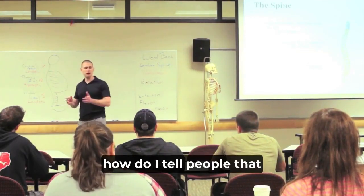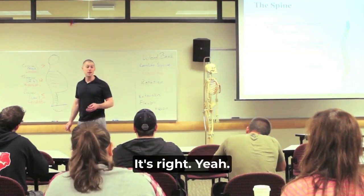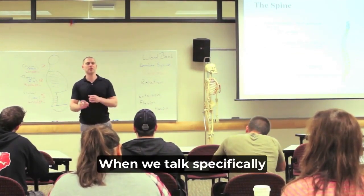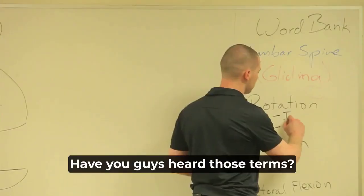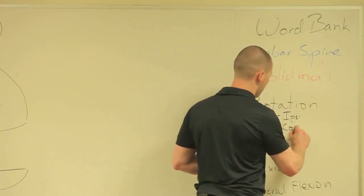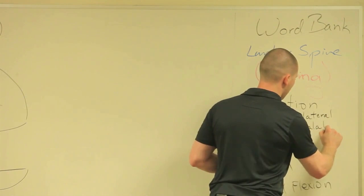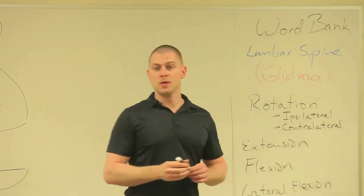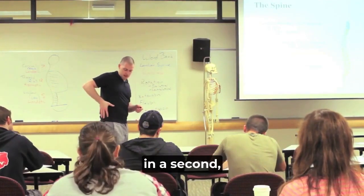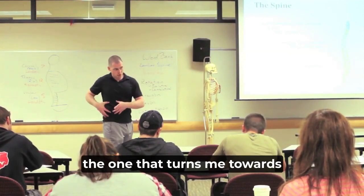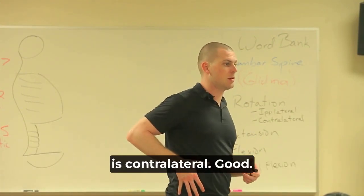If I turn this way, how do I tell people that I turned this way? It's right — so it's right and left rotation. When we talk specifically about muscles, you'll hear the terms ipsilateral and contralateral. Ipsilateral is same side. So if I'm talking about my obliques, the one that turns me toward the side the muscle is on would be ipsilateral. The one that turns me away from the side the muscle is on is contralateral.